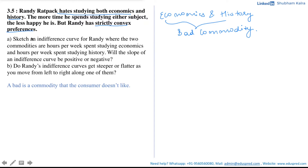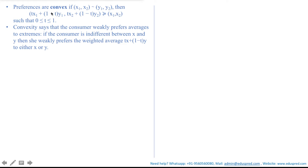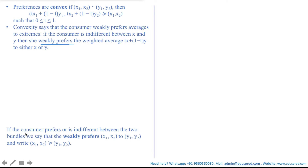Note that till now we have always dealt with convex preferences and not strictly convex preferences, so there is a very important differentiation between the two which you must understand. Convex preferences are defined as follows: the preferences are convex if the consumer is indifferent between the consumption bundle X1, X2 and Y1, Y2, then the weighted average bundle of X1, X2 and Y1, Y2 is at least as good as X1, X2, where T is between 0 and 1, with both 0 and 1 included. In simple terms, convexity says that the consumer weakly prefers averages to the extremes.